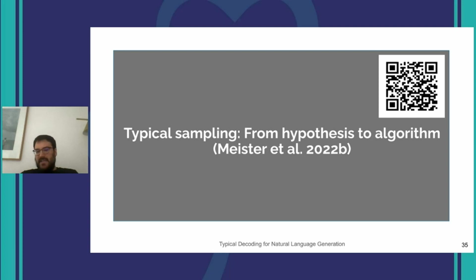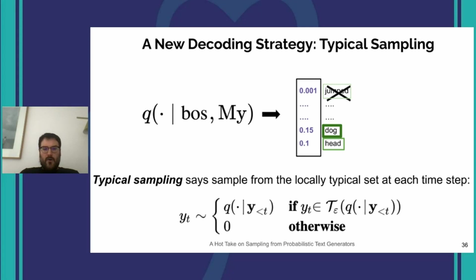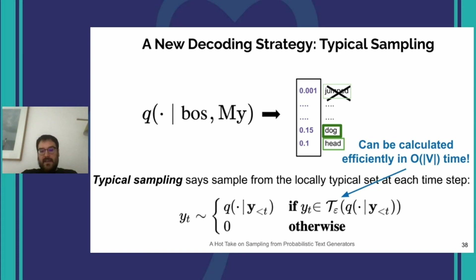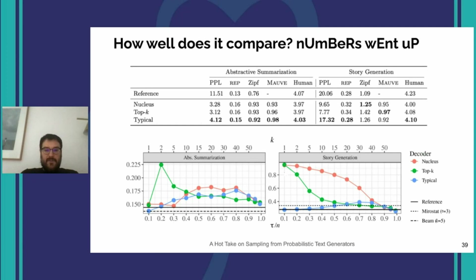In the final part of the talk, I want to move from a hypothesis to an algorithm we call typical sampling — the paper link is up here. The idea is similar to top-K sampling, but instead we only sample tokens in the locally typical set at each time step, zeroing everything else out and renormalizing the distribution. It is very easy to compute — you can compute locally typical sets in O(V) time. It appears to work well: on two different tasks, abstractive summarization and story generation, our method outperforms competing methods nucleus sampling and top-K sampling across a wide variety of metrics, including automated metrics and human evaluation.